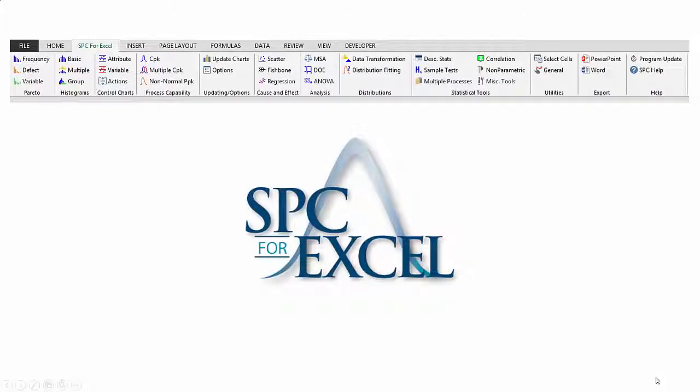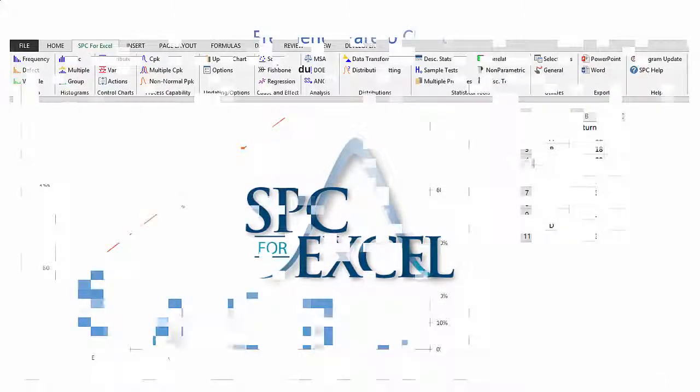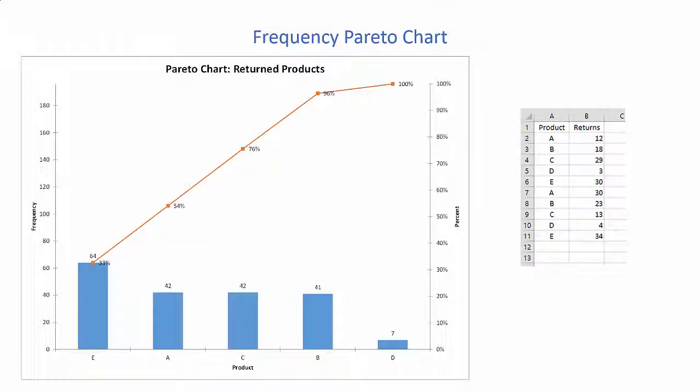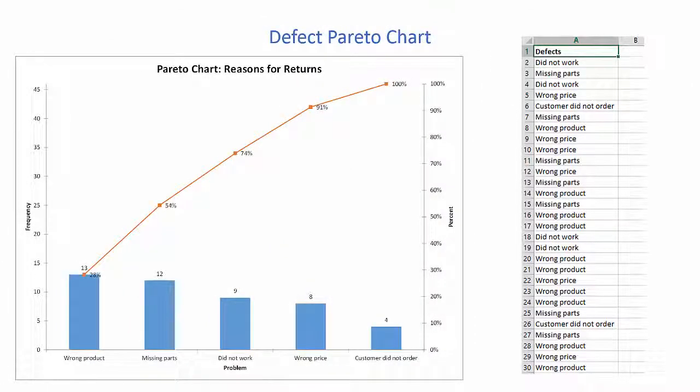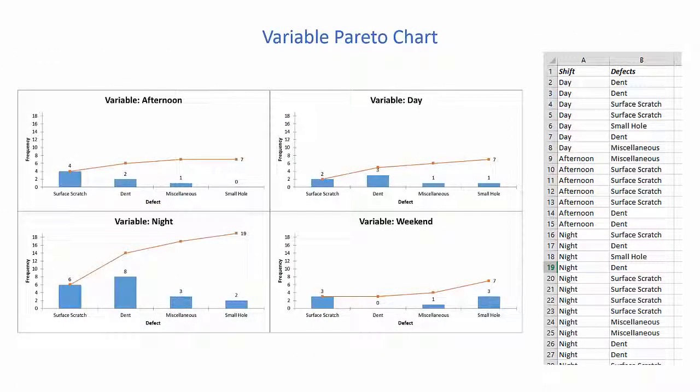I'm going to take a quick look at the SPC for Excel version 5 software package. Starting with Pareto charts, separate the vital few from the trivial many with our Frequency Pareto chart, our Defect Pareto chart, and our Variable Pareto chart to look at different levels of a variable.